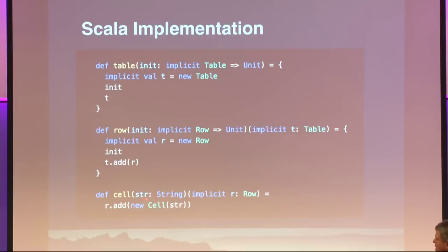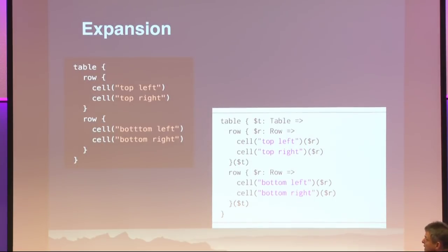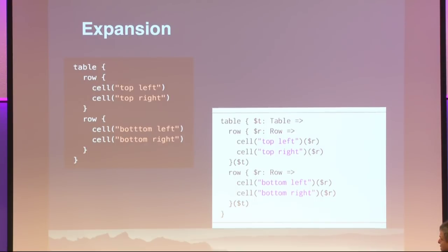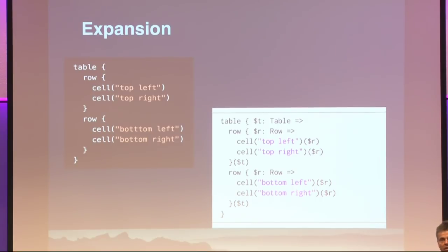And finally, cell is essentially just needs to know the row and it adds itself to that row. So if we now look at what the table example expands to — that's basically what the compiler would have done with all the implicit function types. It would say, okay, table — the argument to a table is an implicit function type, so I immediately build a closure with a compiler-defined name, say $t. That's just an arbitrary thing the compiler sets. And it says, well, that's a table. Row, likewise, needs a computation that needs to know what row it is, an implicit parameter. And that's a row. Then I pass these things down as the parameters, and if you take this expansion and match it up with the implementation, you will find that everything adds itself to the right thing and you end up with the table.